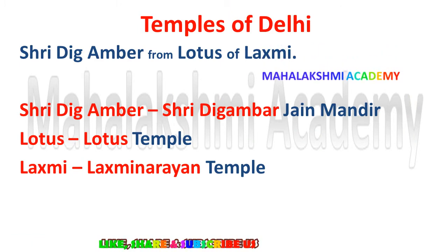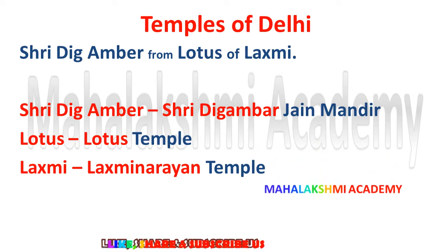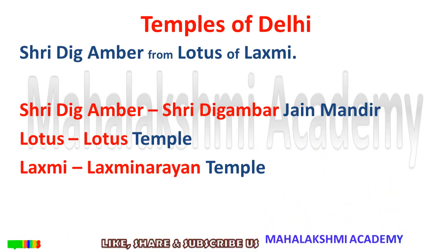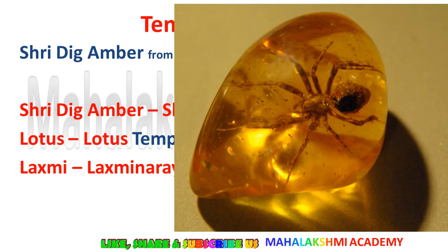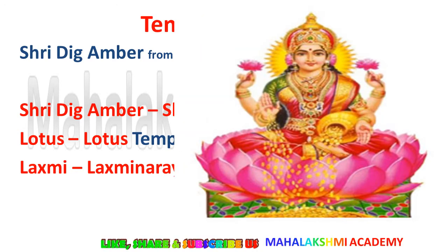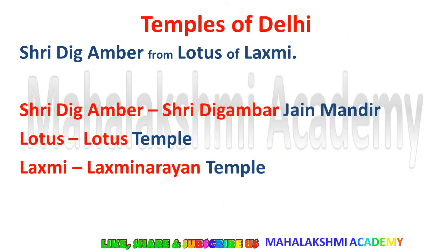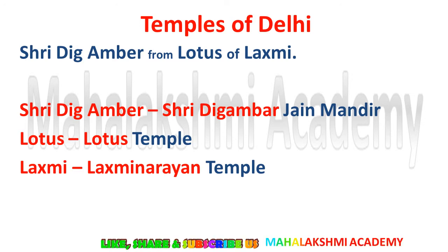Temples of Delhi. The trick is 'Shri dig amber from Lotus of Lakshmi.' Shri is a person's name — he dug amber from the lotus of goddess Lakshmi. Shri dig amber is for Shri Digambar Jain Mandir. Lotus is for Lotus temple. And Lakshmi is for Lakshmi Narayan temple. Through this trick you can learn the temples located in Delhi.